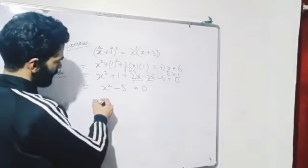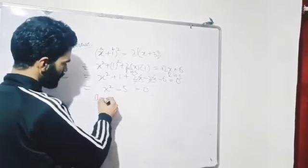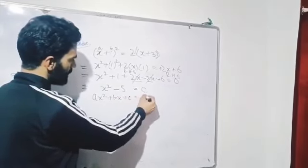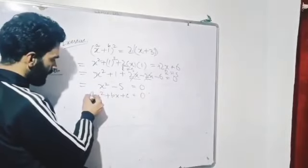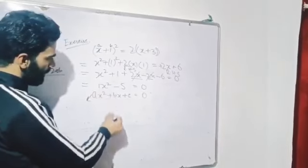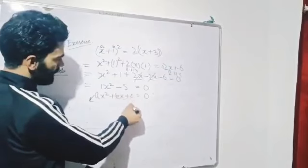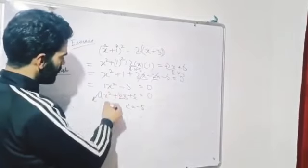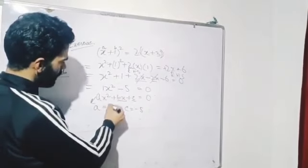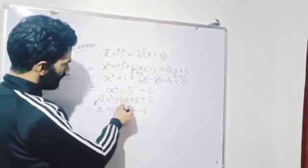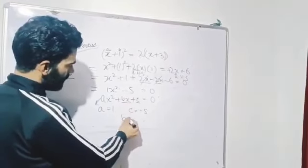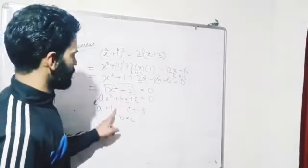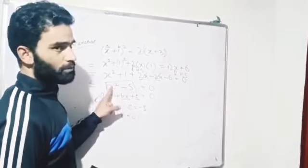This is the standard form: x squared plus bx plus c equals 0. Here, A equals 1, B is absent so B equals 0, and C equals minus 5. The equation x squared minus 5 equals 0 is indeed a quadratic equation — you can verify by checking the degree: the highest power of the variable x is 2.